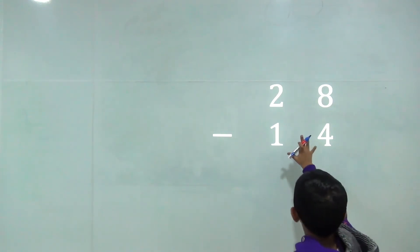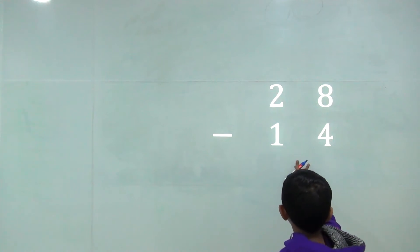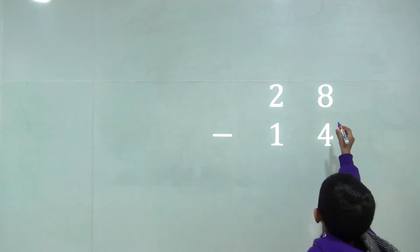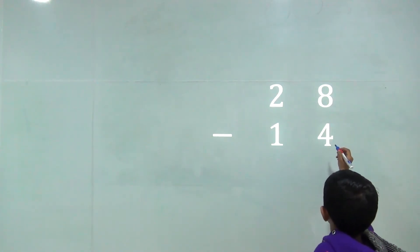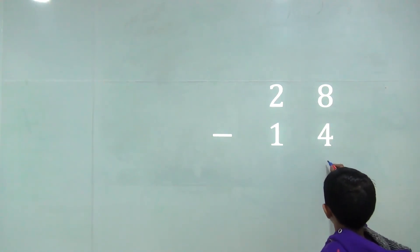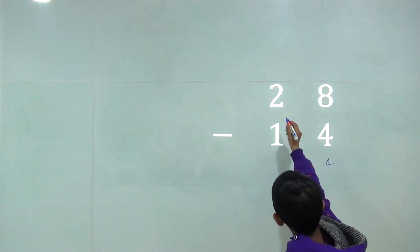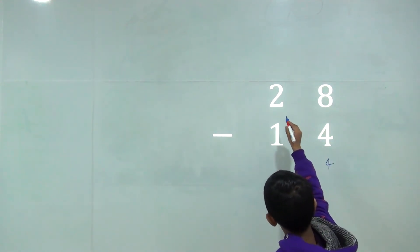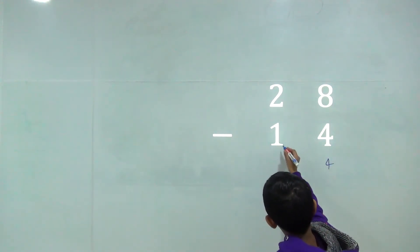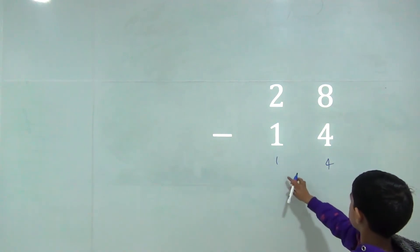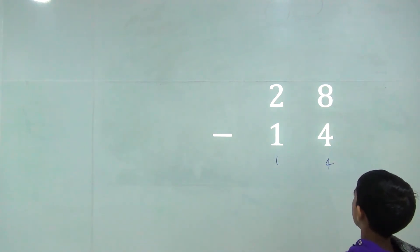Two digit number minus two digit number. Eight minus four is equal four and two minus one is equal one. So the answer would be fourteen.